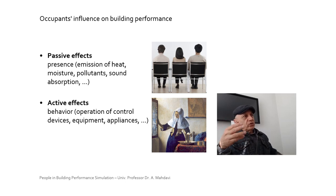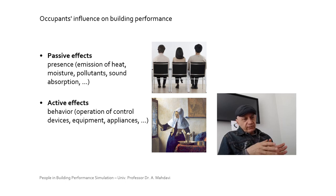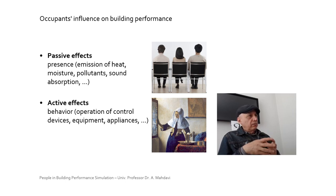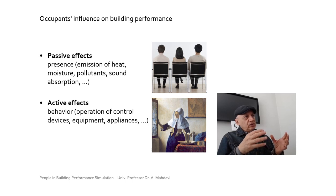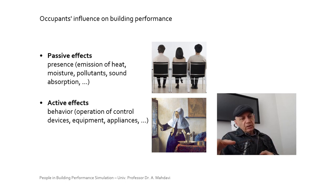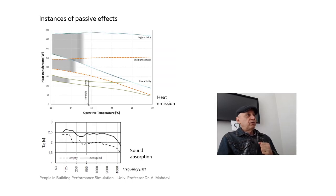Very broadly, I have once suggested that we could distinguish between occupants' passive effects and active effects. Passive effects denote the type of influence occupants have just by mere presence in buildings — that involves various kinds of emissions: heat, pollutants, and so on. With active effects, we mean actual interactions of occupants with building features, building devices, and control systems. Those interactions can change the way the building is operating and hence have implications for indoor environmental conditions and energy performance.